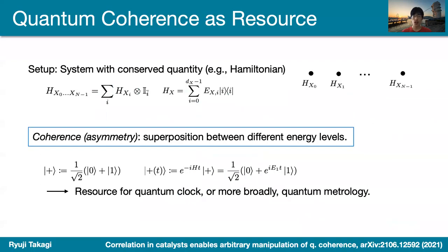We are interested in the manipulation of quantum coherence as an important resource. The setting here is that we have some system with constant quantities such as a Hamiltonian, which has some local Hamiltonians, and we look at the total Hamiltonian as a sum of them. With this we can define quantum coherence, sometimes known as asymmetry, which is a superposition between different energy levels. For instance, the state |+⟩, a superposition between energy eigenstates |0⟩ and |1⟩, is a coherent state because it is not invariant under time translation generated by the Hamiltonian.